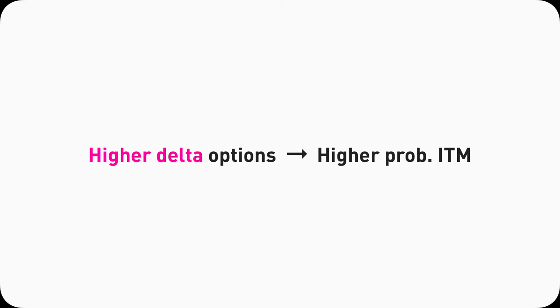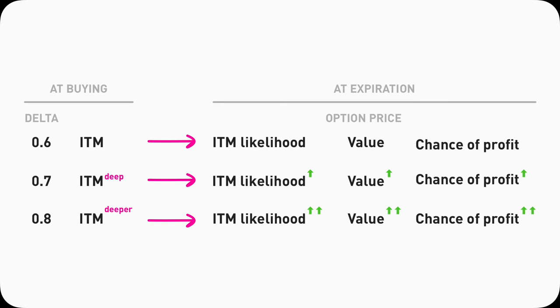Probability in-the-money has a correlation to delta — a higher delta tends to have a higher probability in-the-money. They are not the same thing; they just happen to have a similar mathematical formula under the hood. That is still a very good reference point, especially for those who use Robinhood, because unfortunately Robinhood doesn't show probability in-the-money. If we buy a really deep in-the-money call, it will have a really high delta, meaning it's very likely to stay in-the-money throughout and expire in-the-money — which is a good thing. This means if I buy a deep in-the-money call, it's more likely for me to profit.